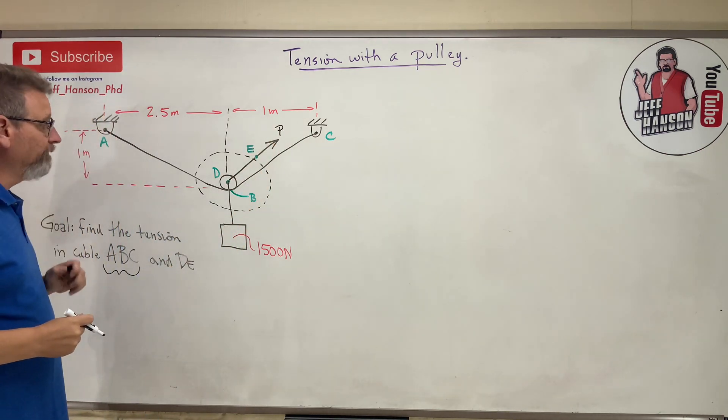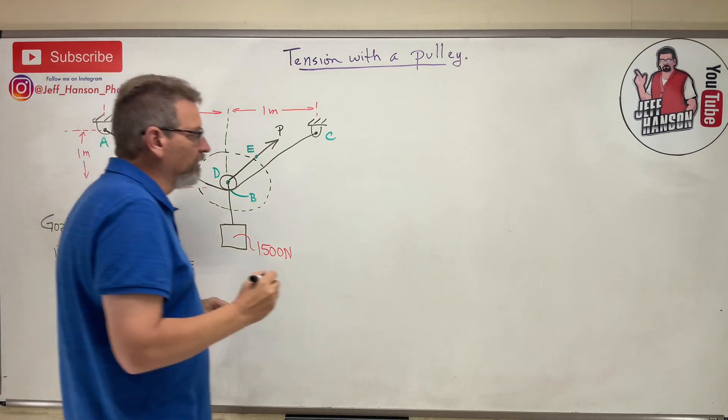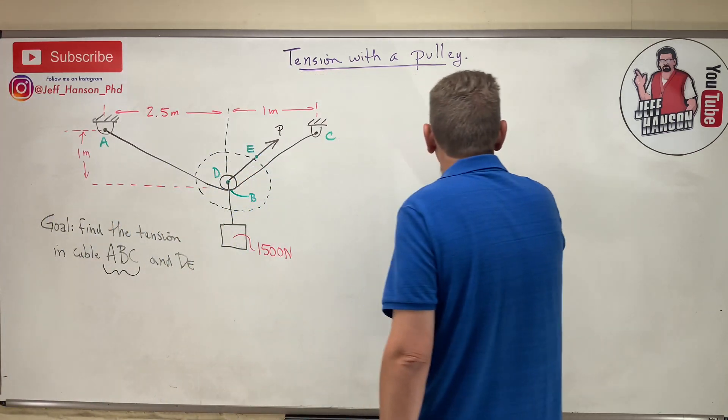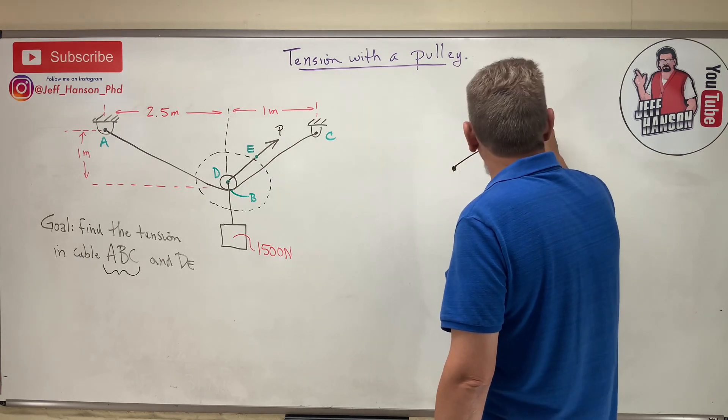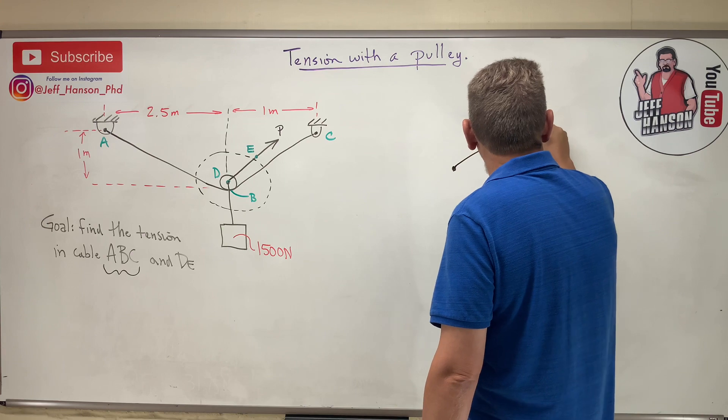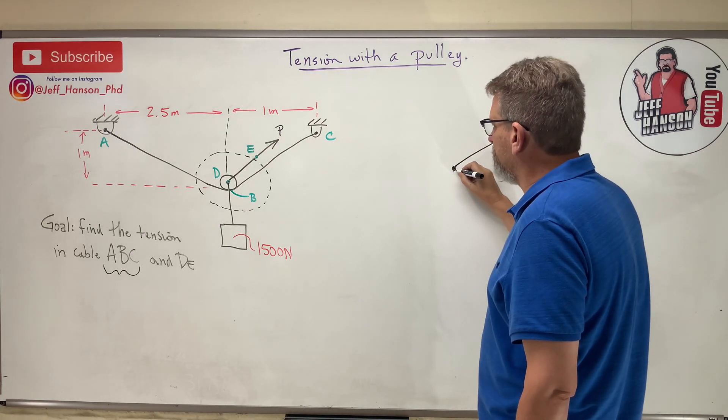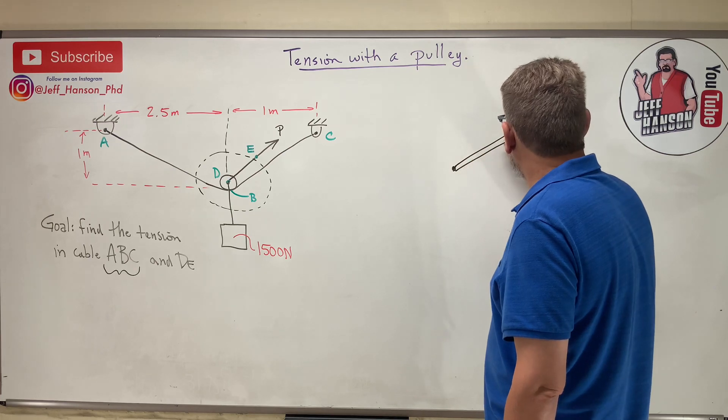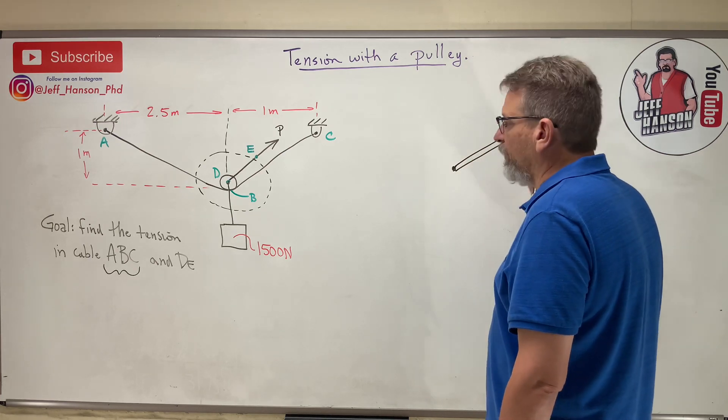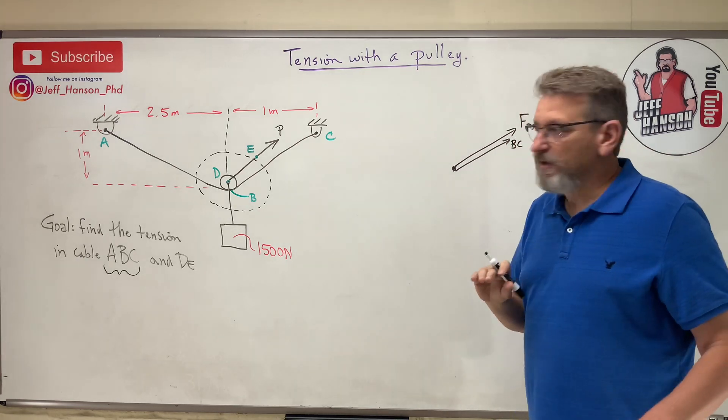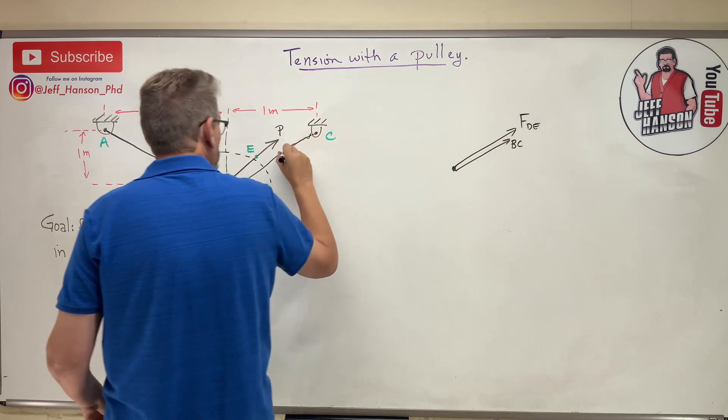What is the force? We'll call it force P in rope DE over there to keep it in equilibrium. So here's what our free body is gonna look like. We've got that force, we'll just call it FDE, and then we've also got in the same direction, I've got force BC.